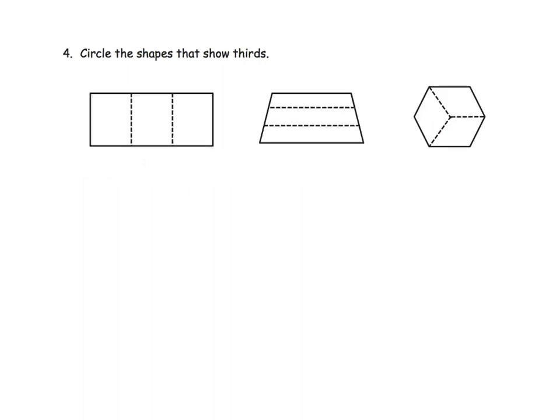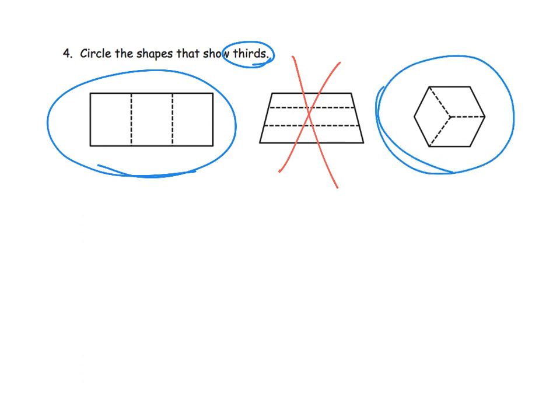More of the same. Circle the shapes that show thirds. The idea is, when we're talking about thirds, it means three equal-sized pieces. So we have three pieces. Are they equal? Yep, they're equal, so we can circle it. Now here, we've got three pieces. Are they equal? This is a tricky one because the answer is no, they're not equal. Look, they're slanted. So this bottom piece is actually larger than the top piece. So that's no good. How about this? Yep, those are thirds. Those are all three diamonds. Each one of these is a diamond put together to make a hexagon.